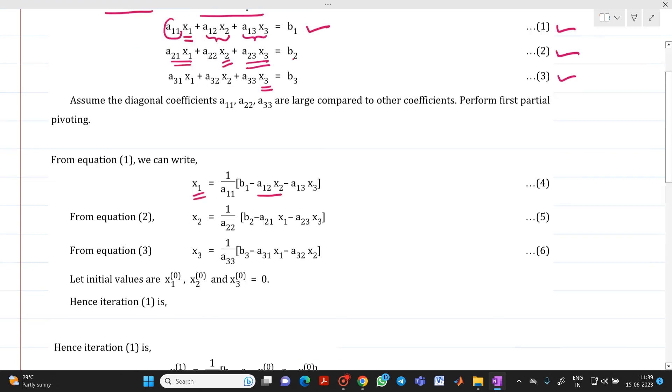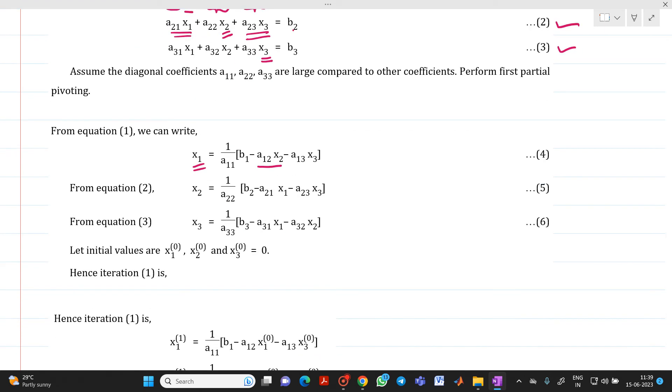Let us consider that we have some initial approximation values: x1 of 0, x2 of 0, x3 of 0 equal to 0. The superscript 0 indicates it is nothing but your initial approximation.